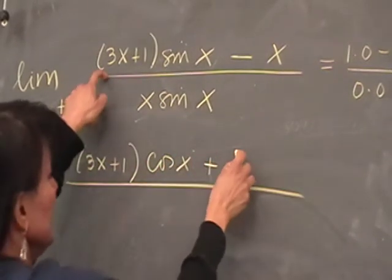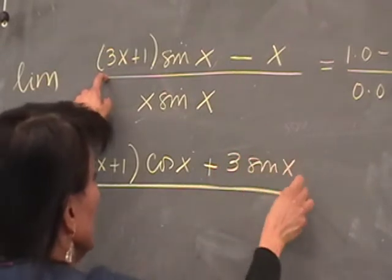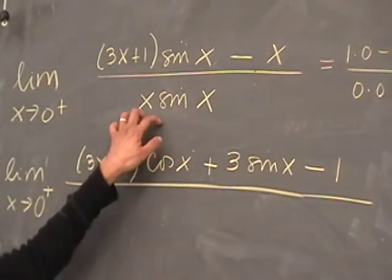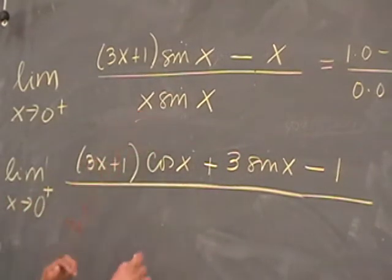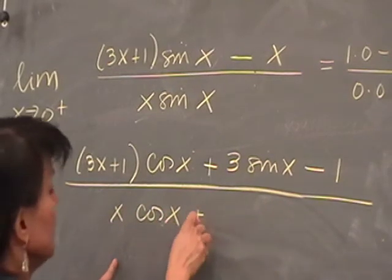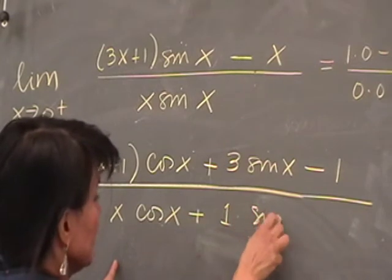So the first is 3x plus 1 times the derivative of the second, which is cosine x, plus the derivative of the first, which is 3 times the second. Minus the derivative of x is 1. And this is just using the product rule. The first times the derivative of the second plus the derivative of the first times the second, correct?